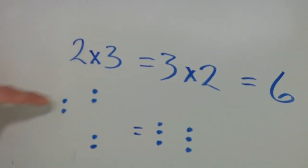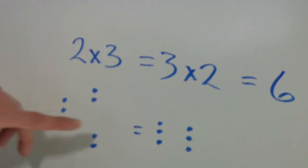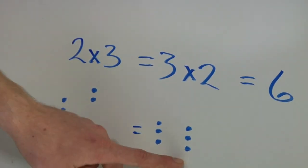You have three groups of two here. You have six if you count them up. And here we have three groups of two. It's also six. The commutative property of multiplication.